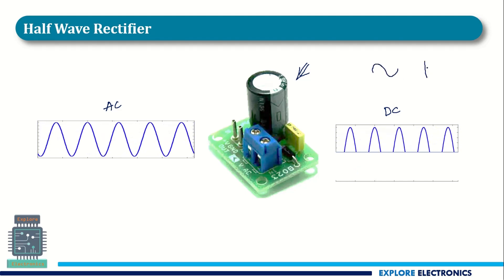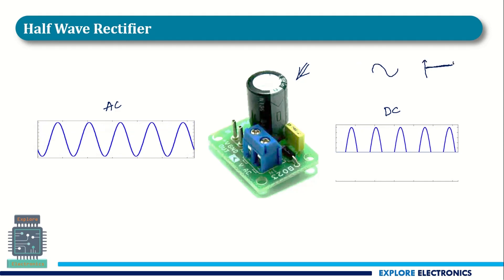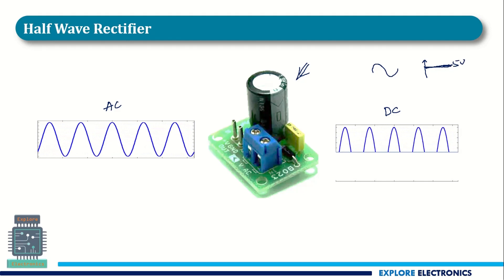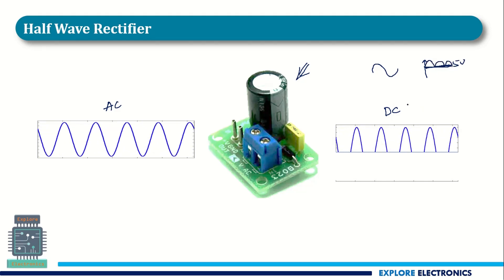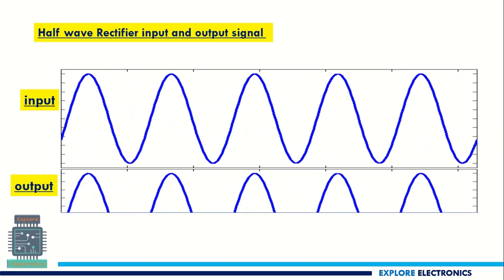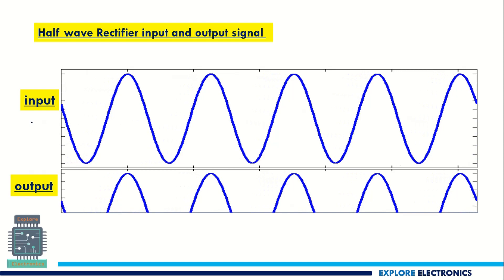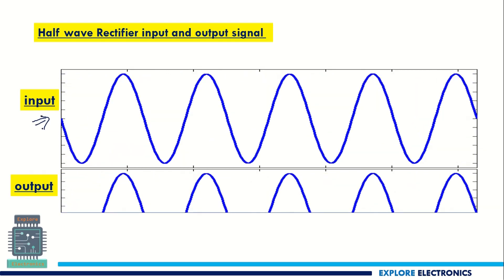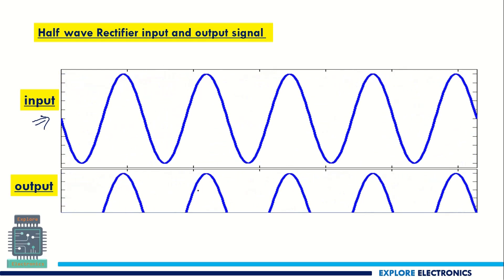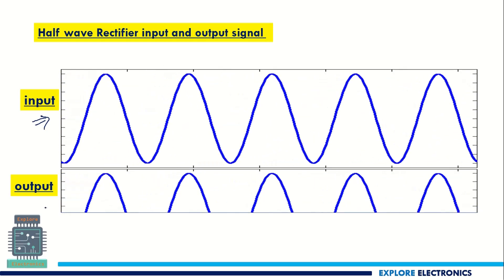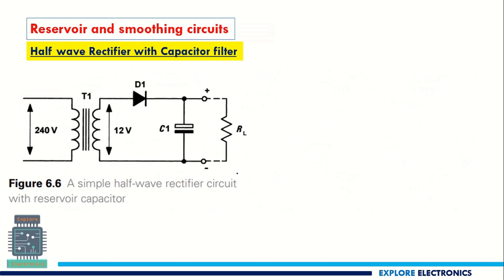This is the practical circuit of the half wave rectifier — applying an AC signal converts it into a half wave pulsating DC signal. For a complete DC output, we need a constant signal, like a steady 5 volts. Since we are getting pulses, we need to eliminate them, which is why we go for a capacitor filter.